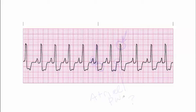The P wave is not visible, so that means this is not coming from the atria. The atria is not responsible for this contraction. In this case, the junction is. So we're talking about an issue at the junction — this is considered a premature junctional contraction.